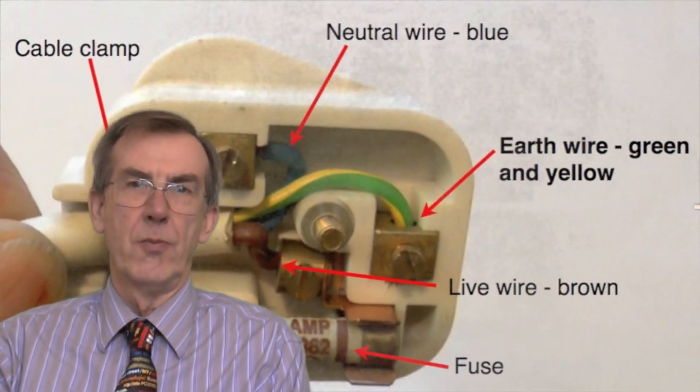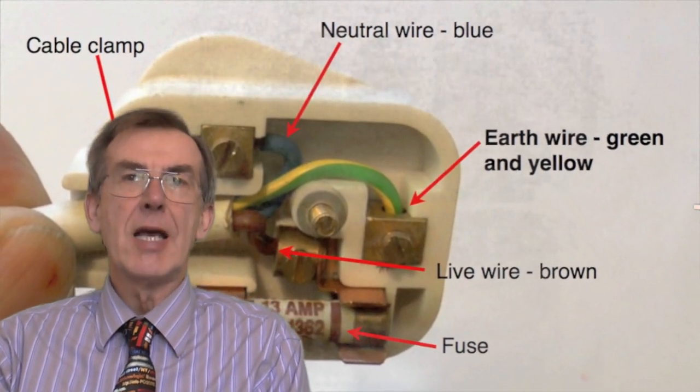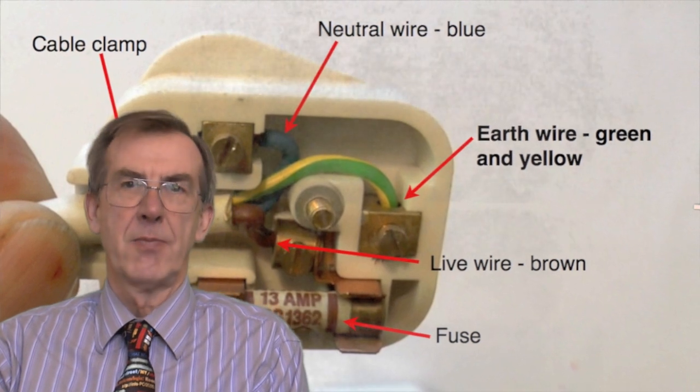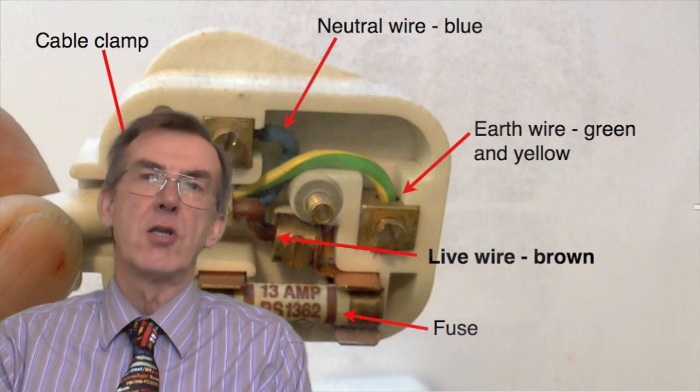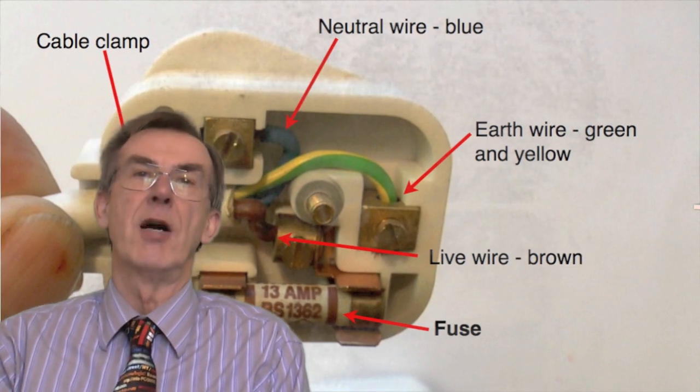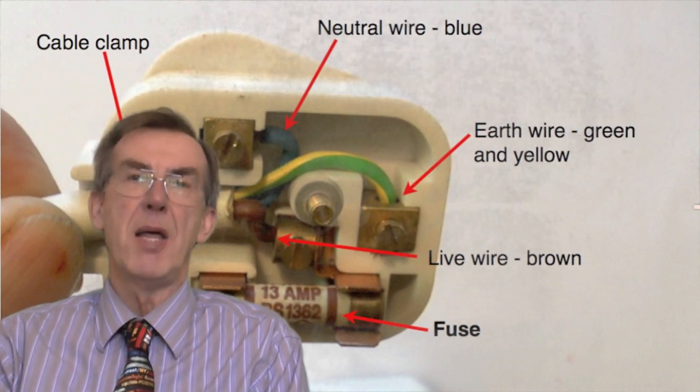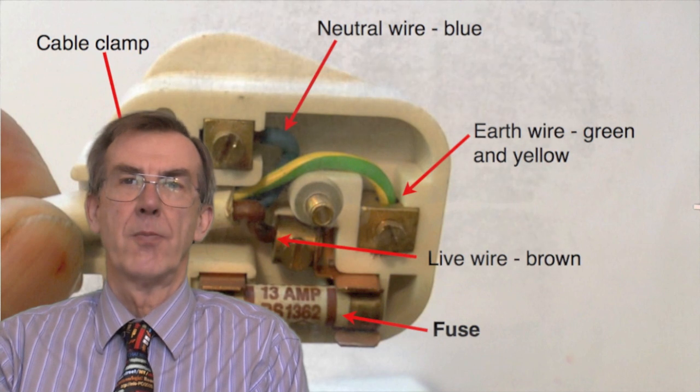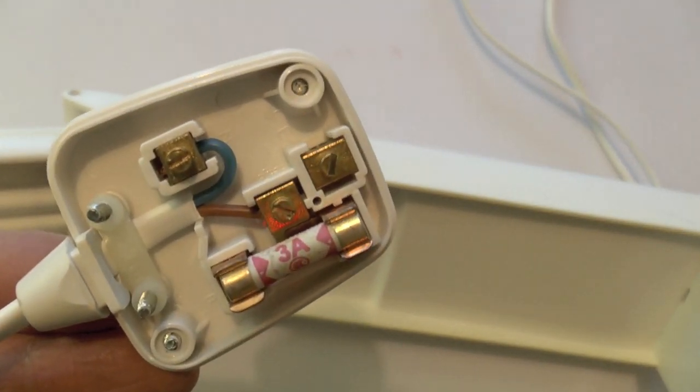At the top is the neutral wire which is blue. On the right hand side is the earth wire, green and yellow, which is a safety device. The live wire, brown, is connected to the terminal which is also attached to the fuse. The fuse is another safety device which contains a small wire, a thin wire which will melt if too much current flows.